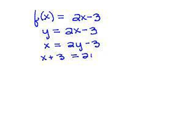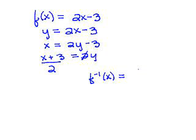We add 3 to both sides, then divide by 2. The last step is to replace y with the inverse function notation, giving us f⁻¹(x) = (x + 3) / 2.